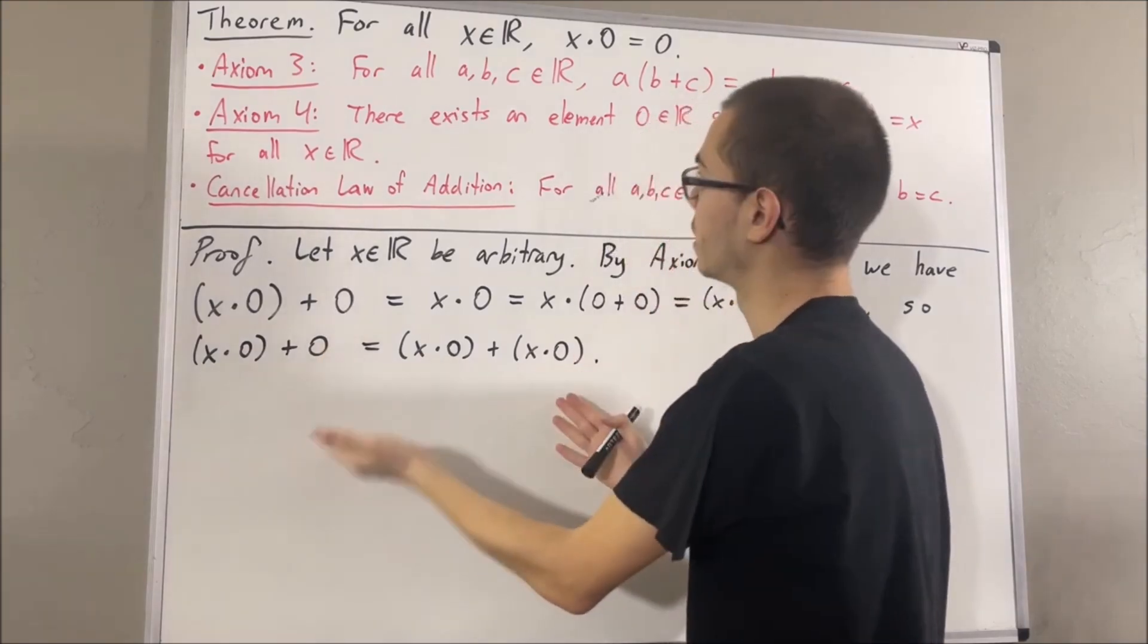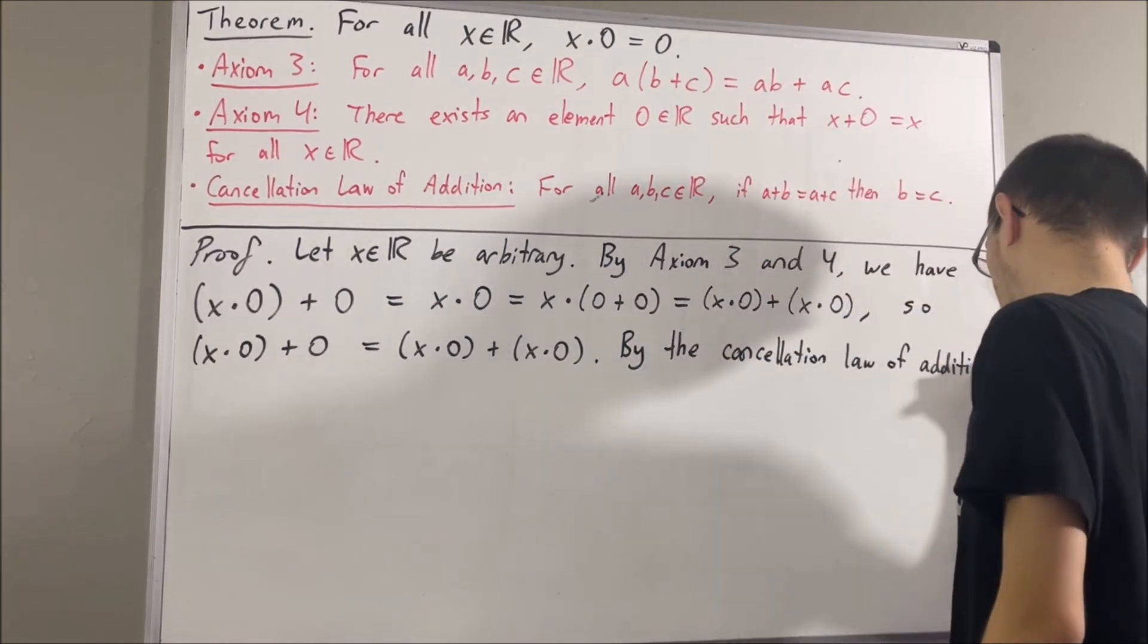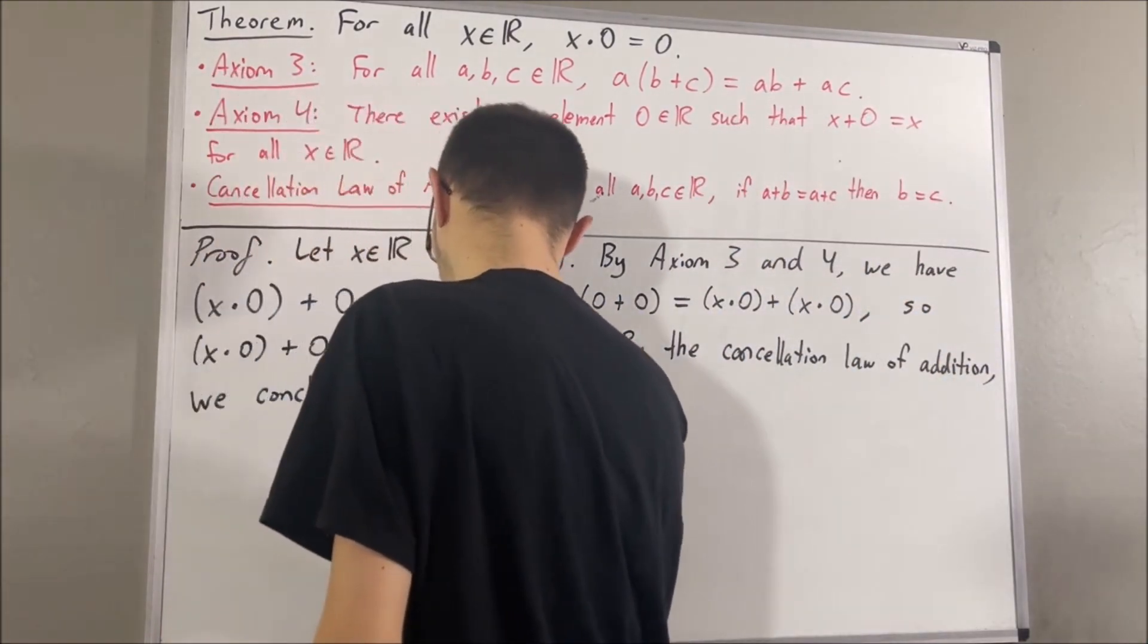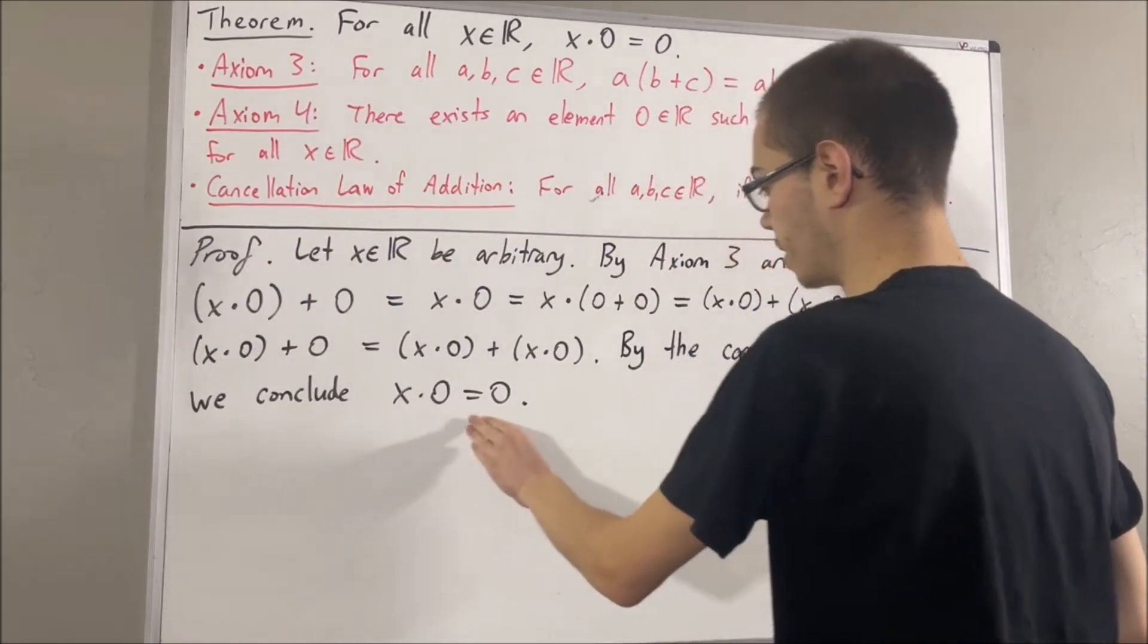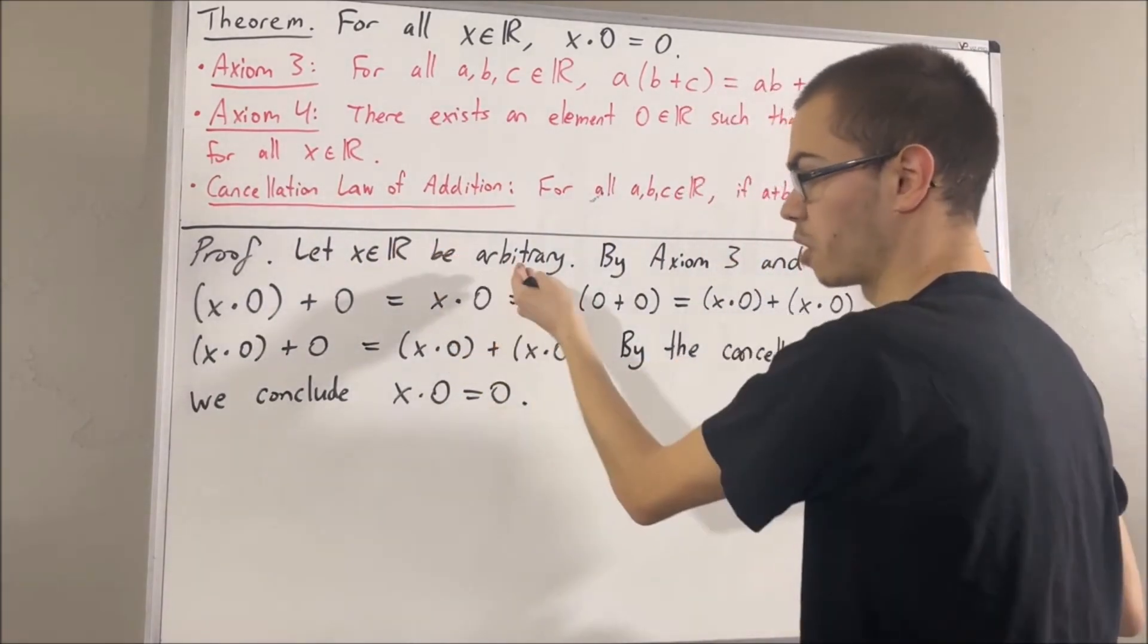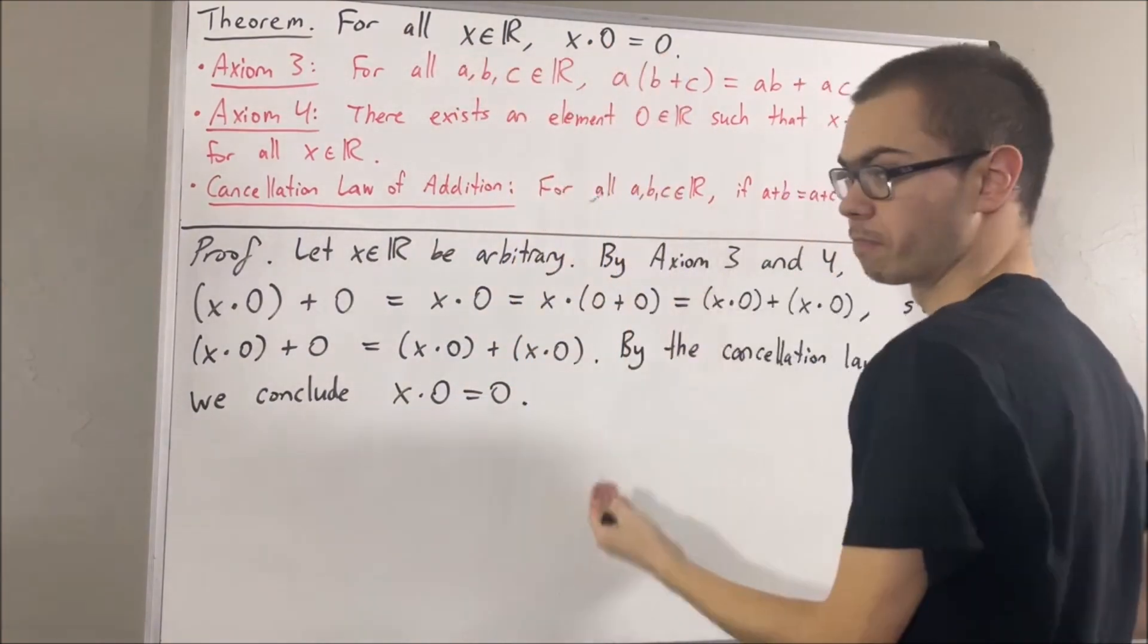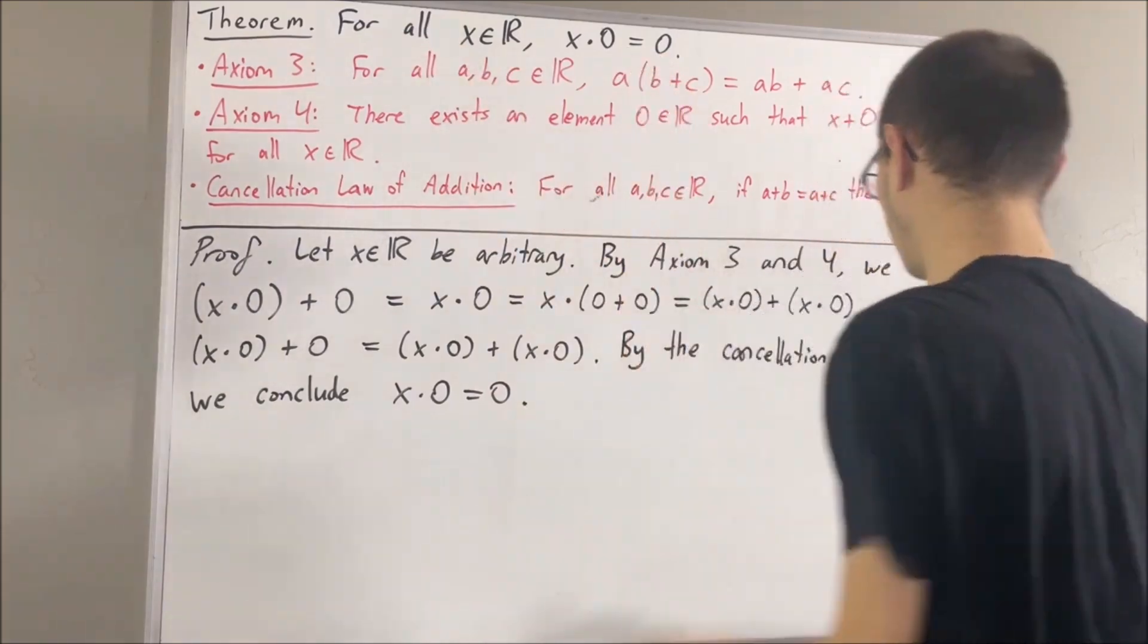Or, in other words, x times 0 equals 0. So, we have shown that x times 0 is equal to 0 for an arbitrary real number x. Since x is arbitrary, this means we have shown for all real numbers x, x times 0 is equal to 0. And that is exactly what we wanted to prove.